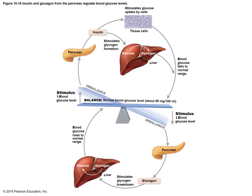This diagram shows the teeter-totter balance of glucose regulation — homeostasis means keeping it level. Ideally, blood glucose should be around 90 milligrams per 100 mL. If it gets too high, insulin is released from the pancreas to move glucose into storage cells. If glucose levels are too low, glycogen stored in the liver is broken down into glucose to raise levels back up.